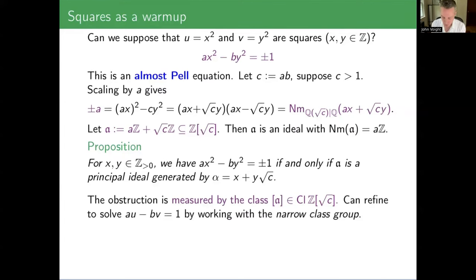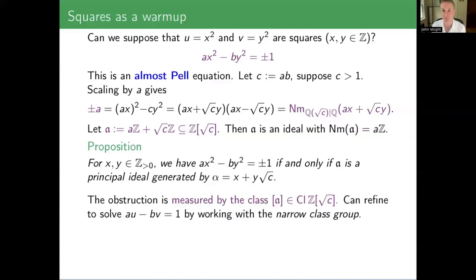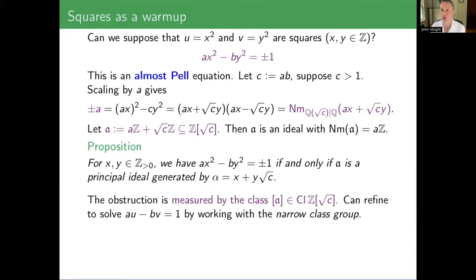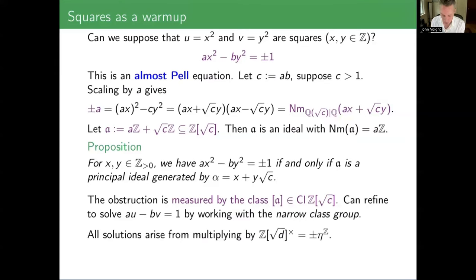So the obstruction to the existence of a solution is the class of this ideal inside the class group of ℤ[√C], where as usual this ring need not be the ring of integers, so I restrict to invertible elements modulo principal elements. That allows us to know when the equation has a solution, up to a sign. If you really care about the sign, then you need an element whose norm is A, not minus A — which is equivalent to looking in the narrow class group, where you mod out only by totally positive elements.